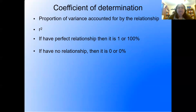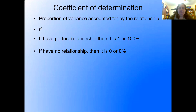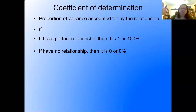In SPSS, you can always convert a two-tailed p-value to a one-tailed p-value by dividing by two. Now let's talk about the coefficient of determination — R squared. This is the proportion of variance accounted for by the relationship. A perfect relationship gives R squared of one or 100%; no relationship gives zero or 0%. Simply take your R and square it to get the proportion of variance accounted for.